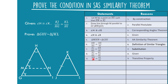Statement ten: HN is equal to KL, by the multiplication property of equality — multiplying both sides of the equation in statement nine by HI, the denominators cancel, leaving HN equal to KL. Statement eleven: Triangle MHN is congruent to triangle JKL by SAS congruence, since we have side-angle-side.